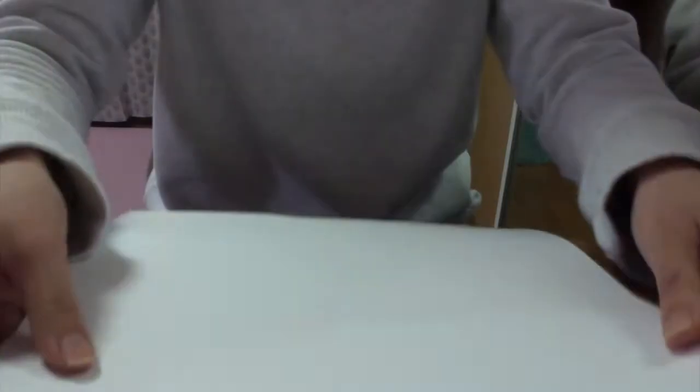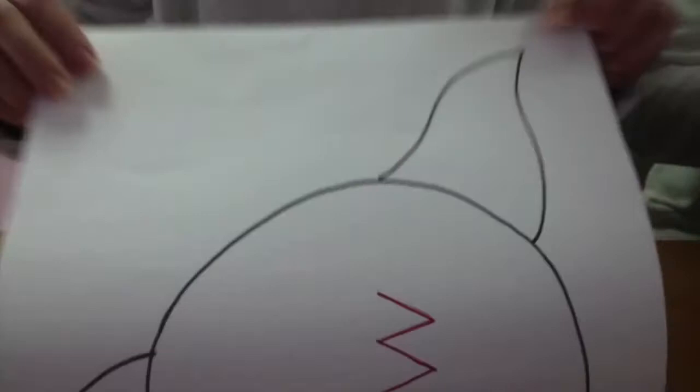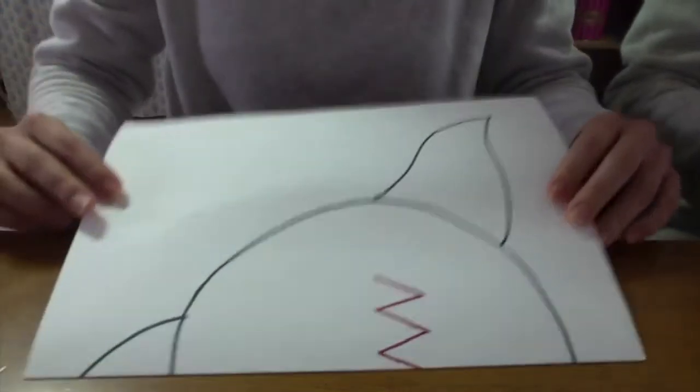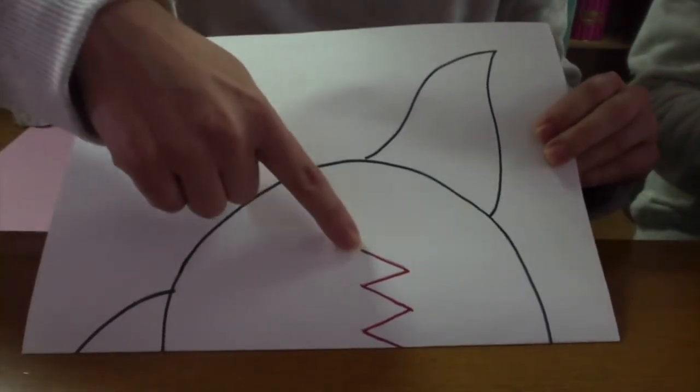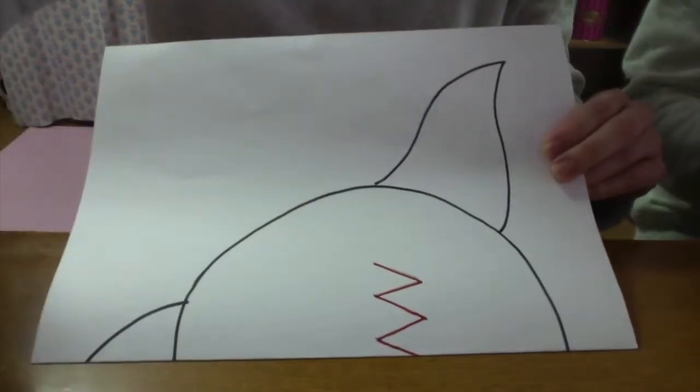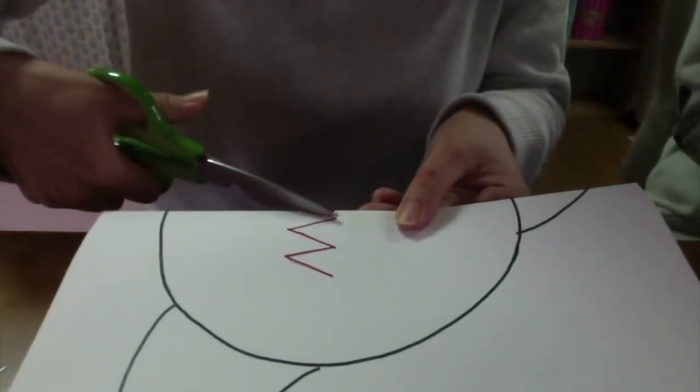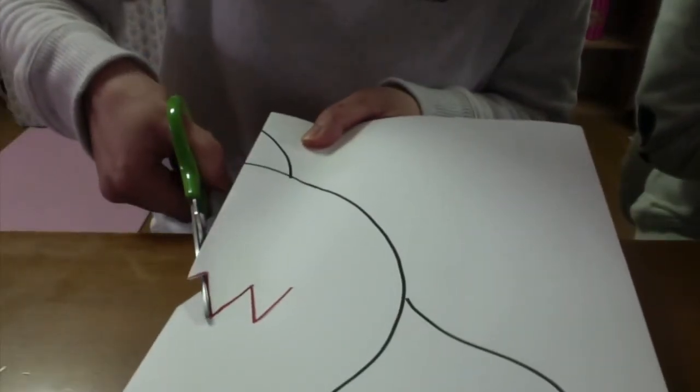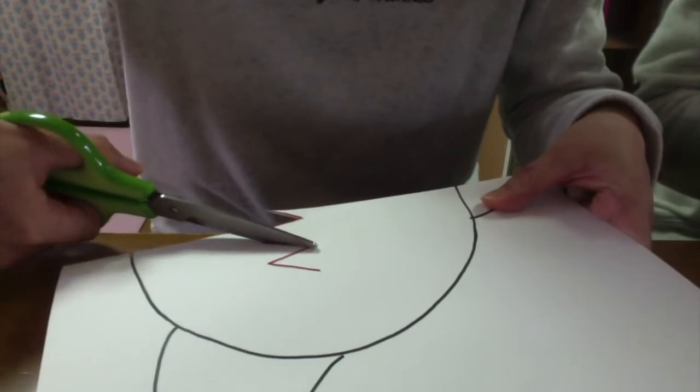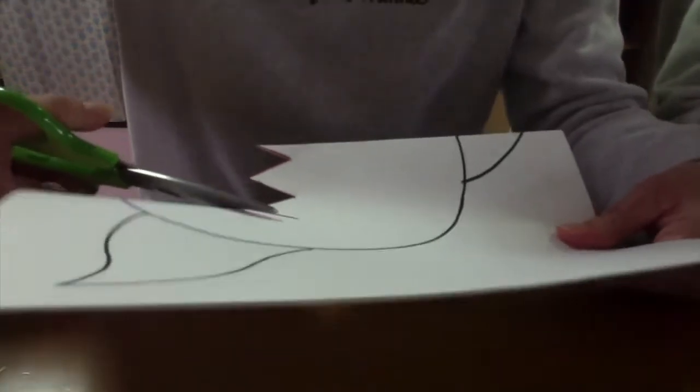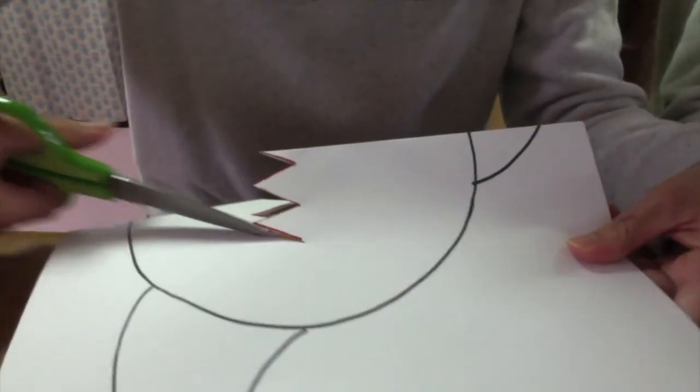We are going to start by folding our white paper in half and then cutting along the red line for the mouth. Watch out for those sharp teeth!